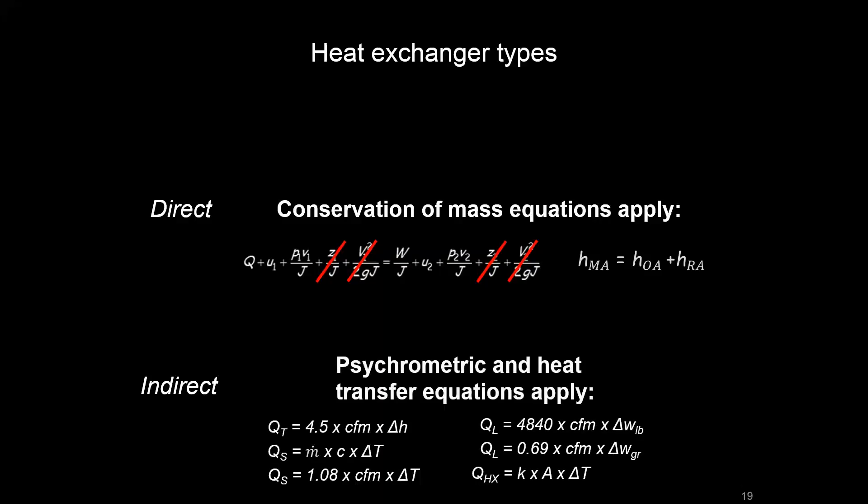With indirect, we're looking at things like a coil with water in it and air blowing across it. Where they're not touching, but they're still having heat exchange because of the temperature difference. So there's going to be a few equations that we went over last time that we'll apply.